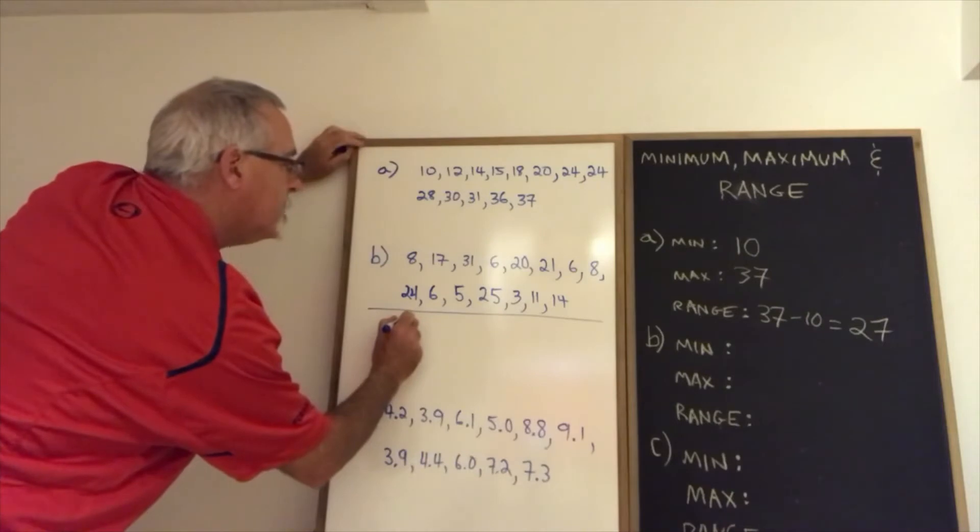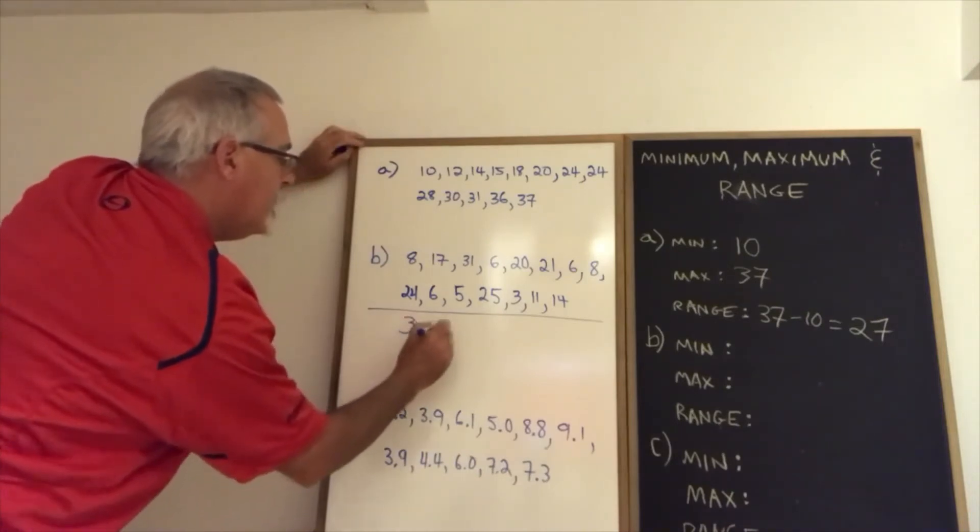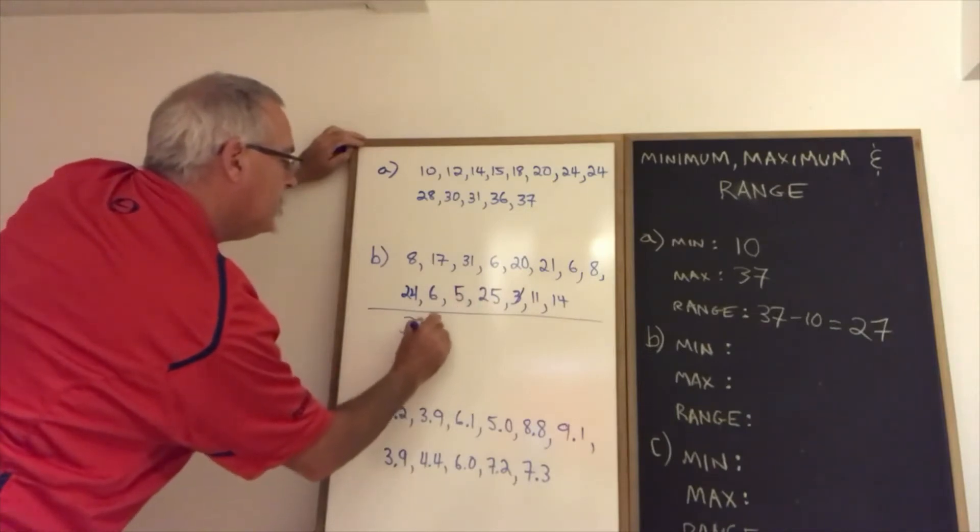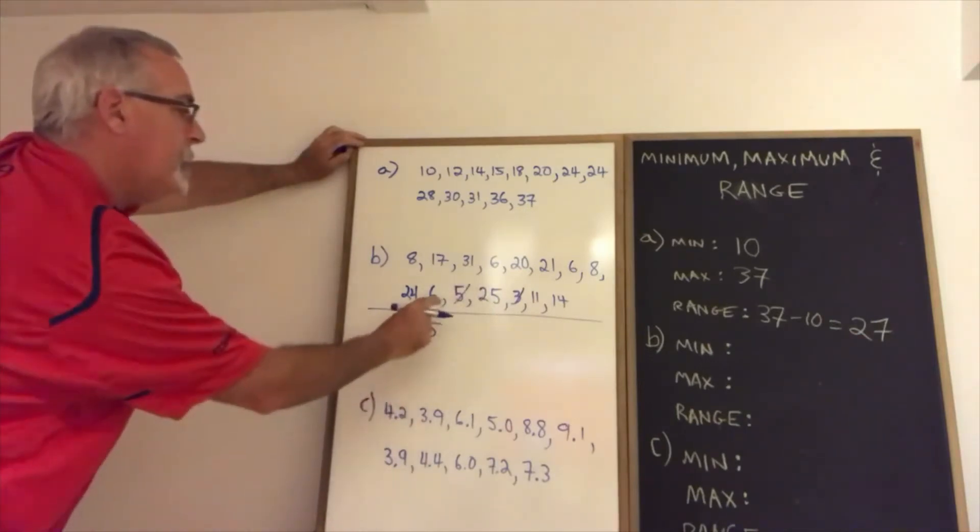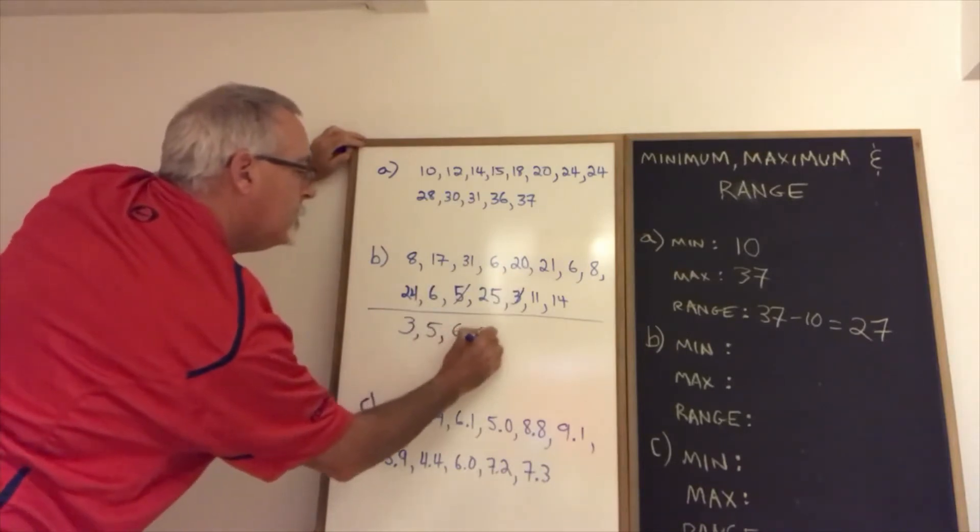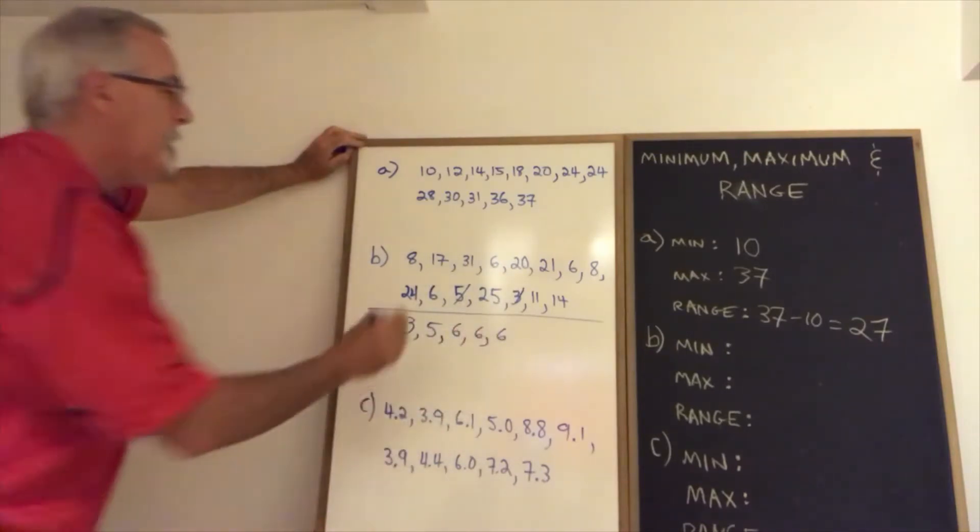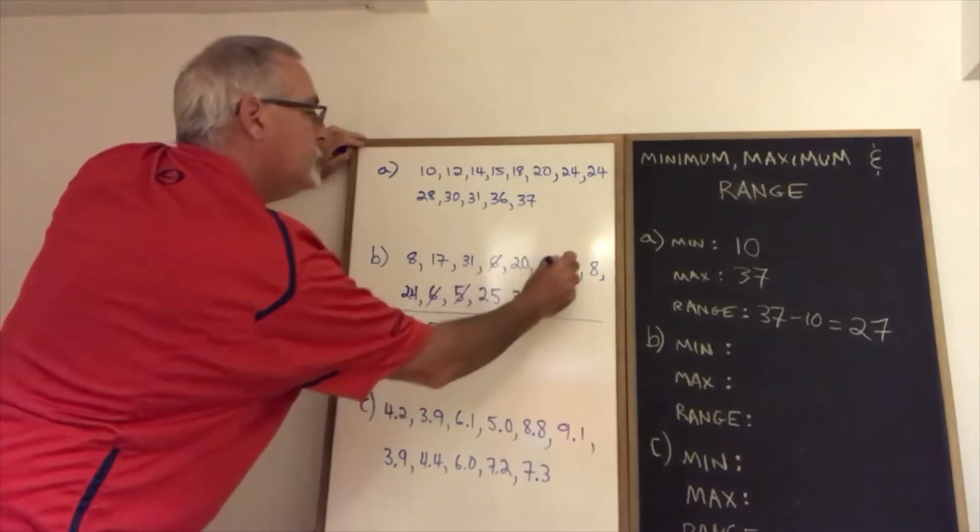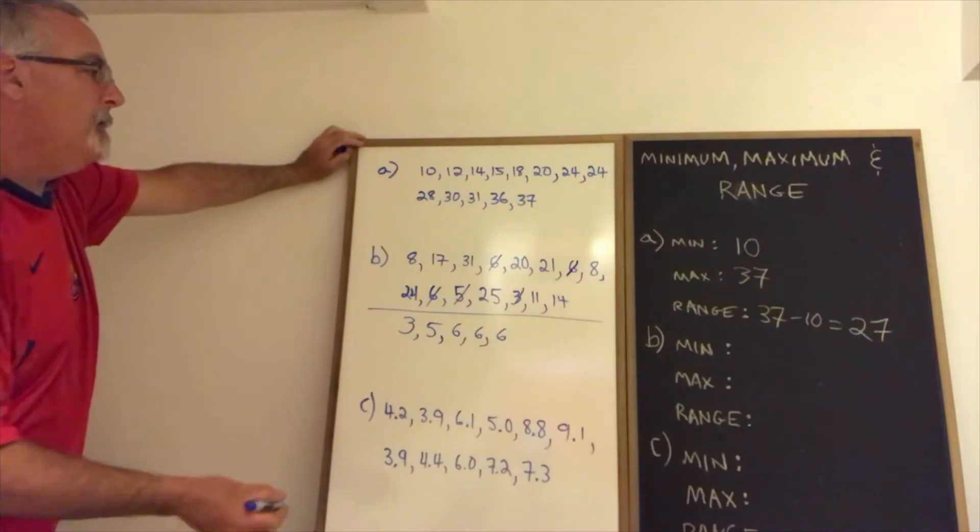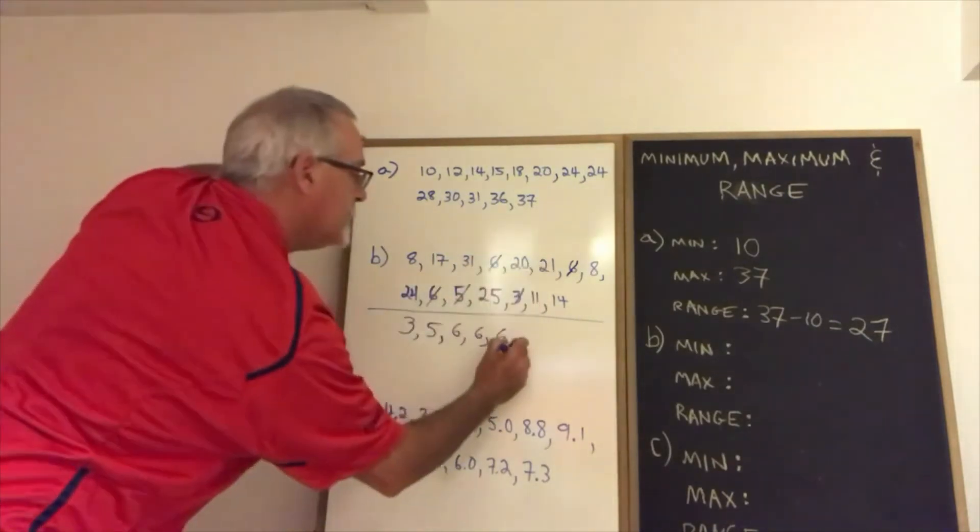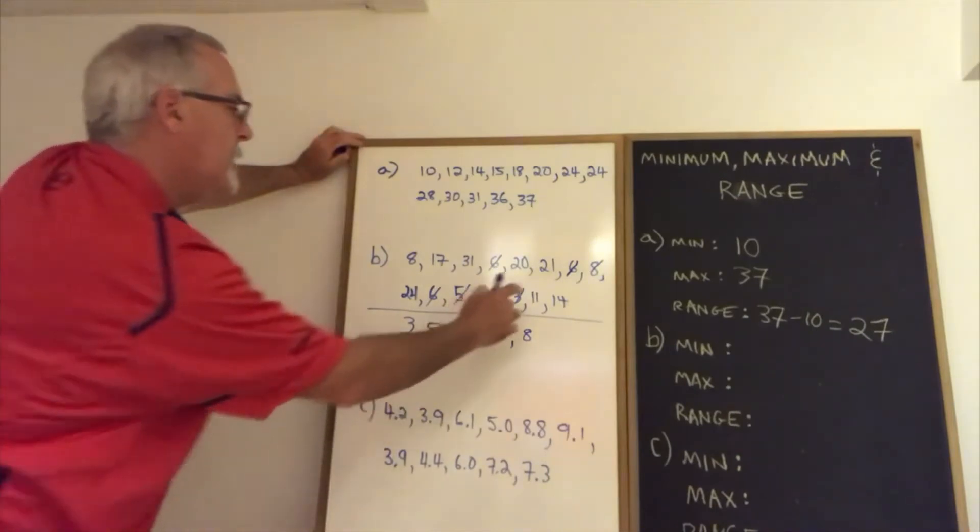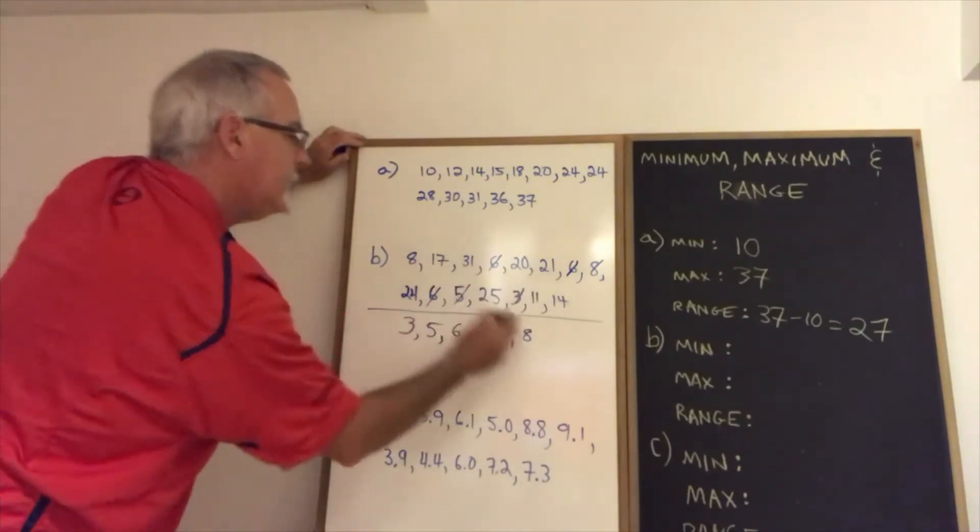So the smallest number I see is a three. I can't see a four, so the next number will be this five. There are actually three sixes, so I have to count all three of those because they're all part of the data. Crossing out the numbers as I use them is a good way to stay organized and avoid making a mistake. The only other single digit number is an eight. And then getting to double digits, we have 11, 14, and 17.